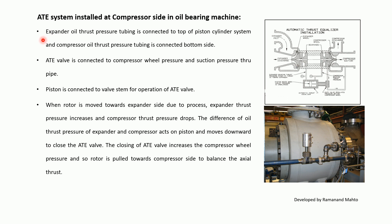For the ATE system installed on the compressor side in an oil bearing machine: the expander oil thrust pressure tubing is connected to the top of the piston-cylinder system, and the compressor oil thrust bearing pressure tubing is connected to the bottom side. The AT valve is connected to the compressor wheel pressure and suction pressure through pipe, and the piston is connected to the valve stem for operation of the AT valve.